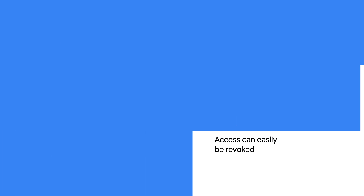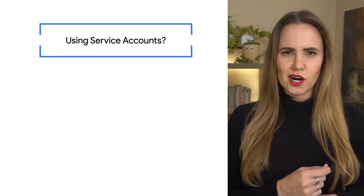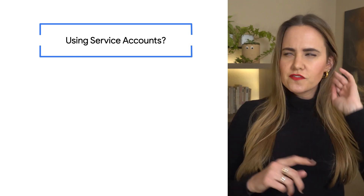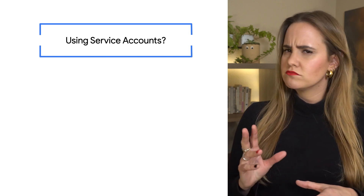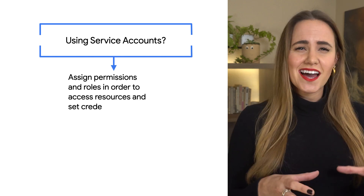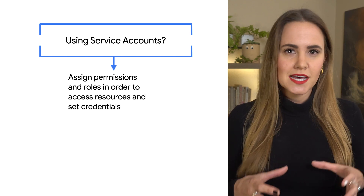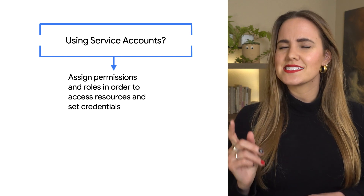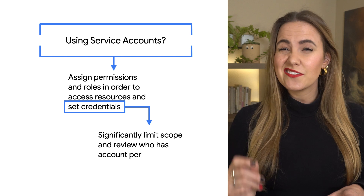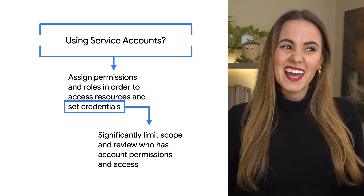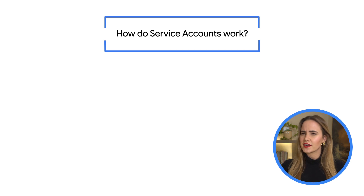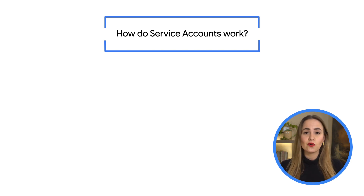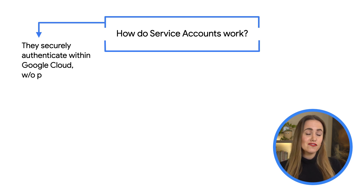But how should I set them up? A service account is a robot identity, and this service account identity is assigned permissions and roles in order to access resources and set credentials, the same way you'd grant access to humans. So because service accounts provide the same access as user accounts, it would be wise to significantly limit scope and review who has account permissions and access to your accounts on a regular basis. Service accounts don't use passwords in the same way a user account might. So if you're within Google Cloud, you can just attach service accounts to instances and other resources within Google Cloud, and it'll securely take care of authenticating the identity of the service account.